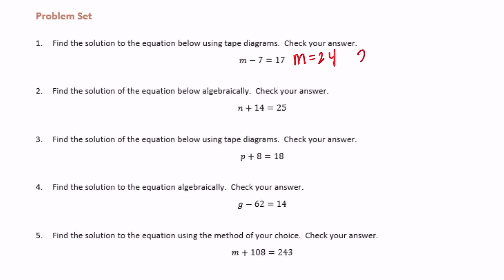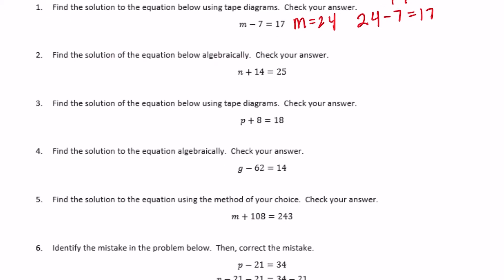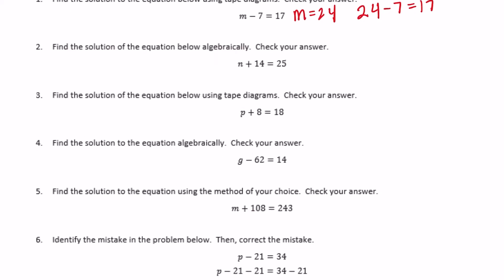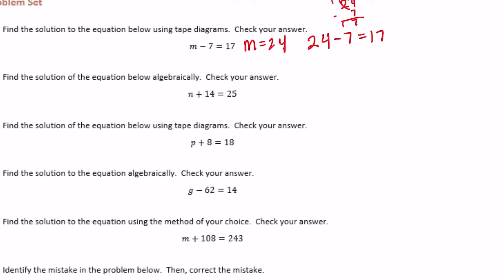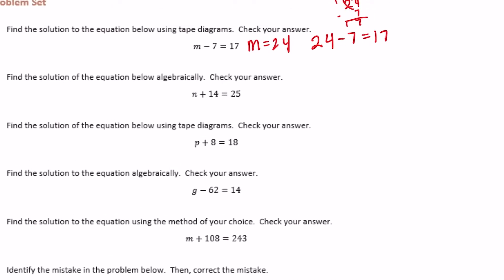And we can check by saying: is 24 minus 7 equal to 17? We can show that it does. Number 2 — find the solution of the equation below algebraically and check your answer. So we have M plus 14 equals 25.